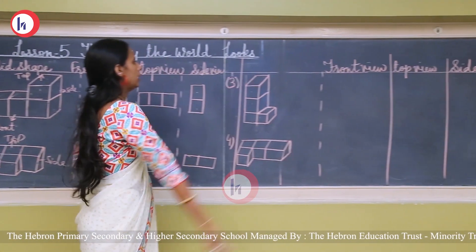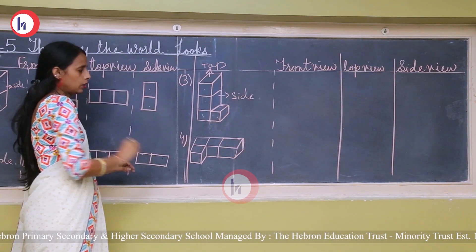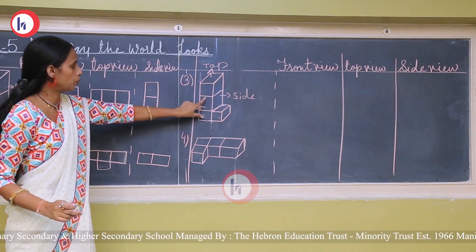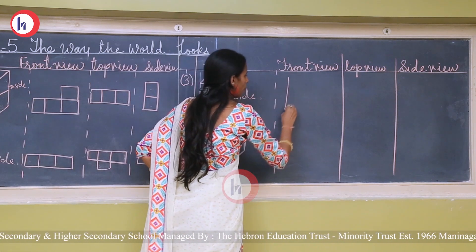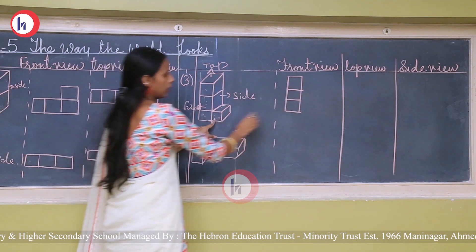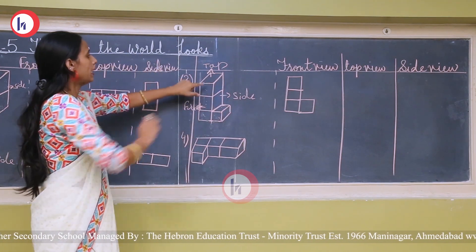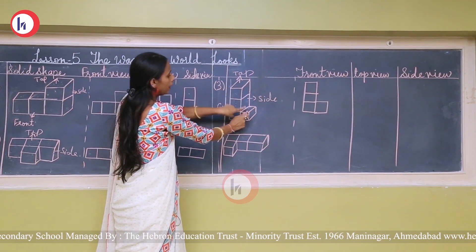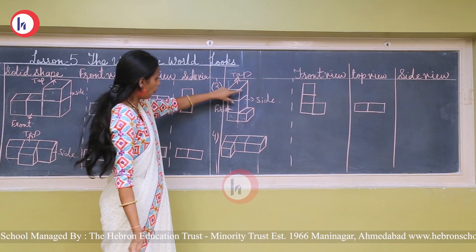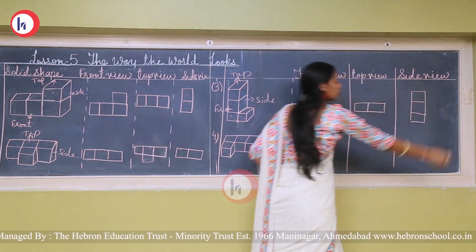This is the third solid shape. This is the top view, this is the side, and this is the front view. For the front view: I can see 1, 2, 3 squares and one more square — draw it like this. For the top view: only 1 and 2 squares are visible, so I draw 2 squares. And for the side view: 1, 2, 3 squares will be there. So whenever we draw the side view, 3 squares are drawn.